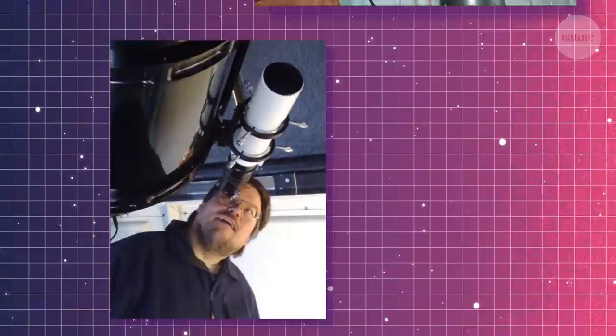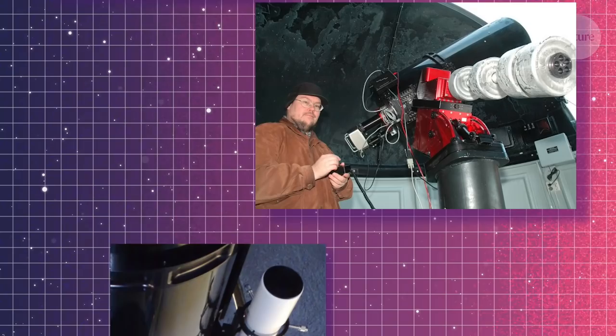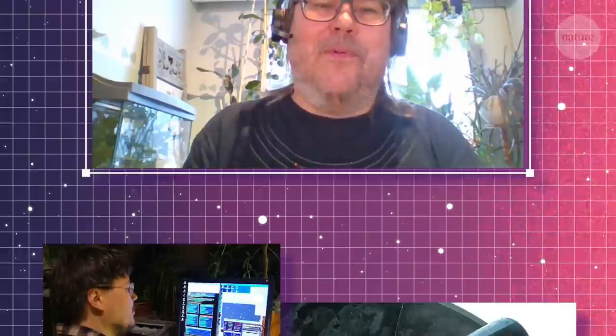Amateur astronomers like Arto are a key part of the search. Their excellent knowledge of the night sky and flexibility to react quickly to alerts make them the perfect resource to pinpoint a new object. And they have the advantage of numbers.